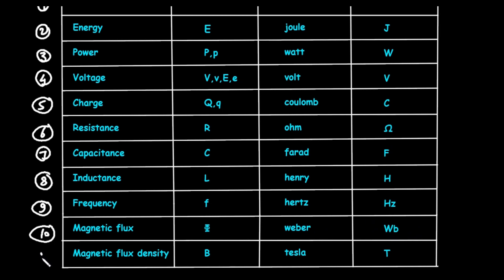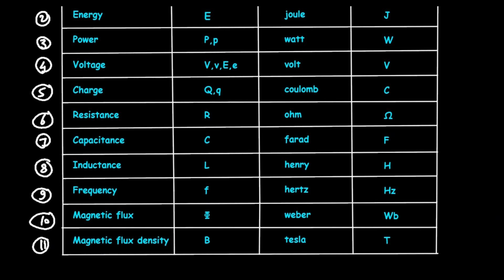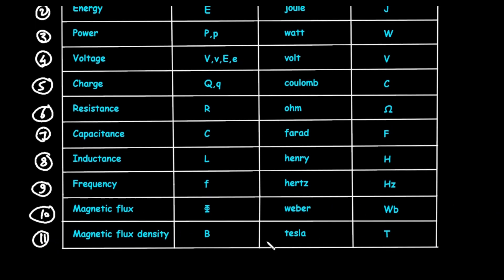Next is magnetic flux density. Magnetic flux density is represented by symbol capital B, and its unit is Tesla. Tesla can be abbreviated as capital T.